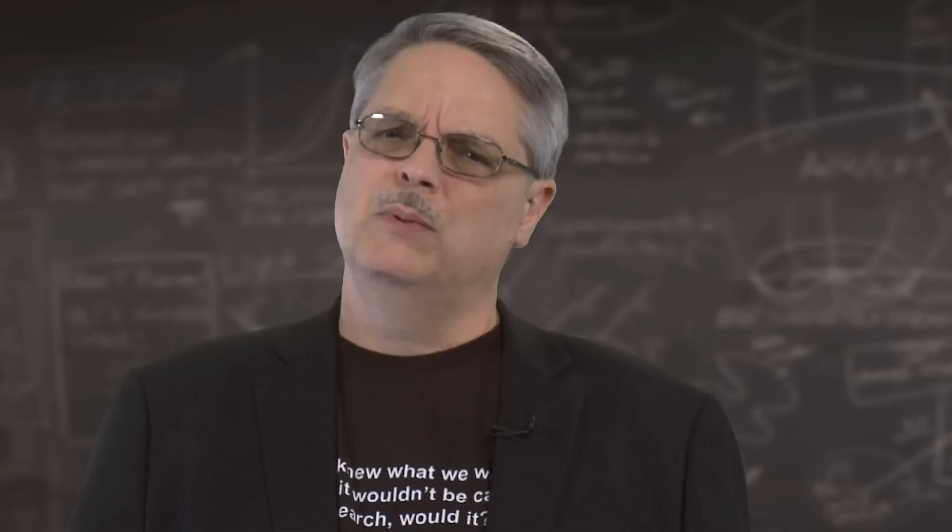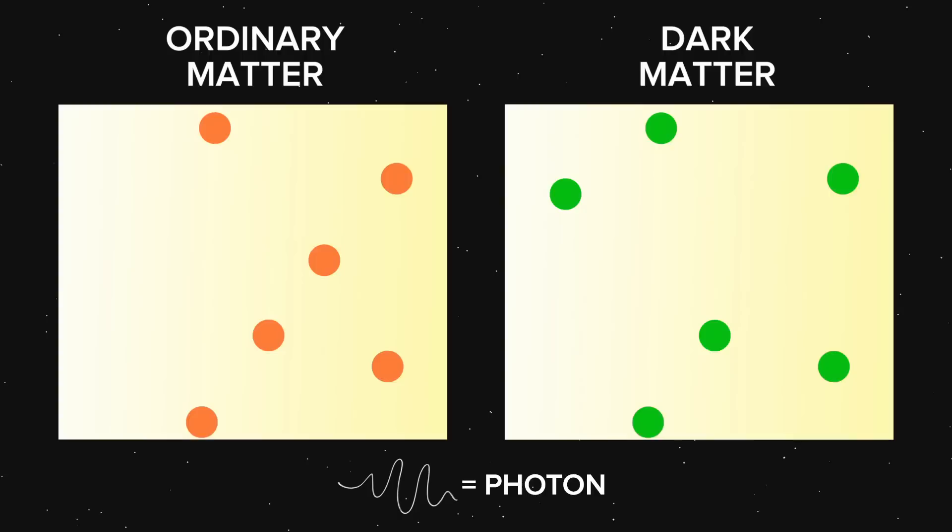Still, it may be that some tweaks to the WIMP theory might be needed. While there are a number of proposed solutions, one idea is particularly cool. One of the key properties of dark matter is that it does not absorb nor emit electromagnetic radiation. Basically, visible light, radio waves, infrared, ultraviolet, none of them interact with dark matter. This is because dark matter carries no electric charge.